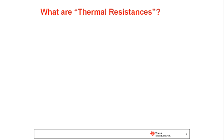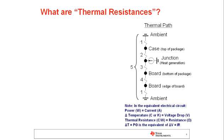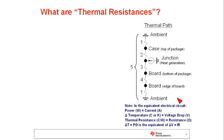Next, a brief overview of thermal resistances — terms you've likely seen in datasheets. We're looking at a junction or source generating heat, then a resistor network going up through the top of the package to ambient, and down through the bottom of the package, spreading through the board, and out to the surrounding ambient. This is a simple approximation of the thermal path, but it's helpful for thinking about contributors and putting together basic estimates.